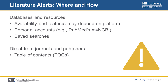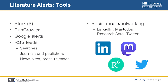There are also specific apps that you may want to consider that help you with literature alerts. Some of these include fee-based ones such as Stork, or free ones such as PubCrawler or Google Alerts. Another option to consider is RSS feeds. This can be done with specific searches, through journals and publishers, or through news sites and press releases. You may have apps specific to reading RSS feeds, or it could be done through something as simple as Outlook or other email programs.